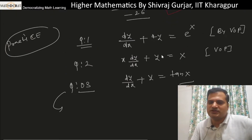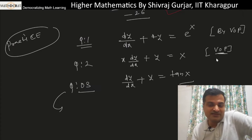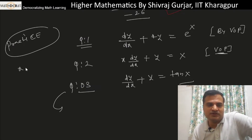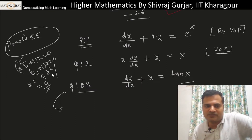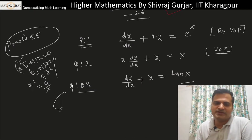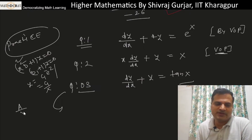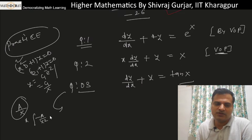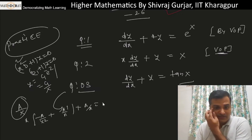Let me solve Question 3: dy/dx + y = tan x. This is a linear equation. The complementary function corresponding to (xD+1)y = 0 gives y_c = c₁·e^(−x). By variation of parameters, we assume y_p = a(x)·e^(−x).